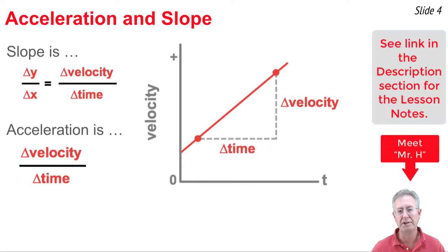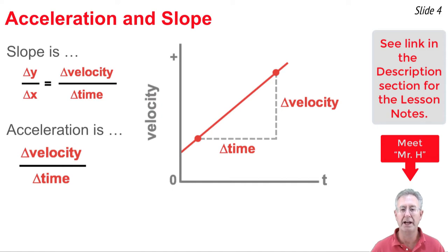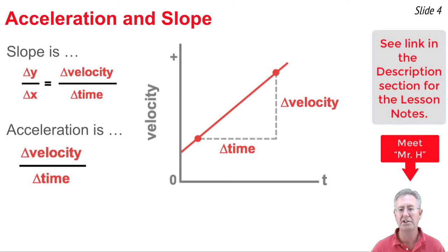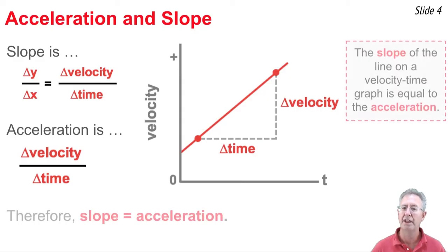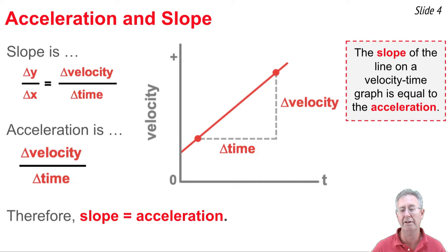Let's look a little more at this connection between acceleration and slope. When we calculate the slope of a line on a graph, we're calculating the change in y divided by the change in x. For a velocity-time graph, we're plotting velocity values along the y-axis. So when we calculate the change in y, we're calculating the change in velocity. And since time is along the x-axis, when we calculate delta x, we're calculating the change in time. So the slope is the change in velocity divided by the change in time. Earlier in this tutorial series, we've learned that ratio of velocity change to time change is the acceleration. Therefore, the slope of a line on a velocity-time graph is the acceleration of the object.